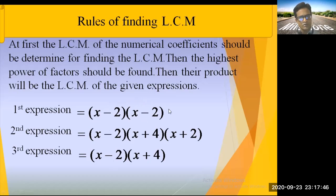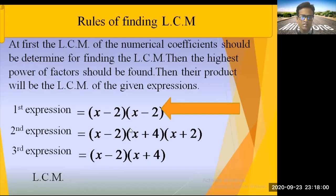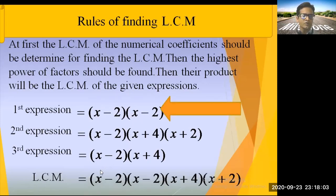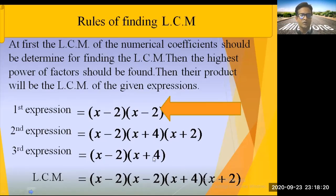When we take (x - 2)² we have already covered (x - 2) from the second and third expressions. Also, (x + 4) appears once in the second and once in the third expression, so we write it once. Similarly, (x + 2) appears once in the second expression, so we write it once.